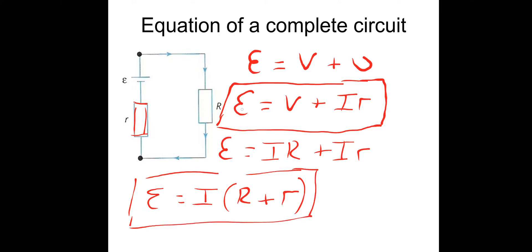EMF is measured in volts, voltage is measured in volts, I is current in amps. Big R is the external resistance in the circuit, and little r is the internal resistance inside the power supply, both measured in ohms.